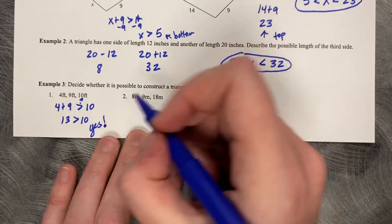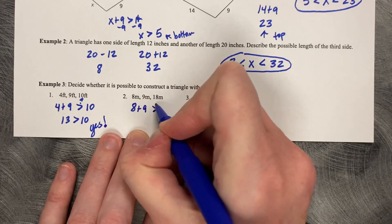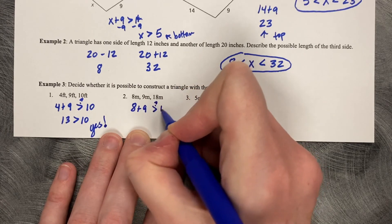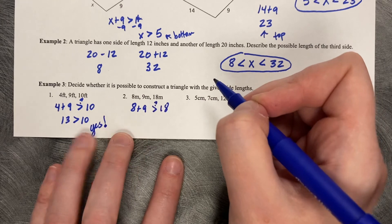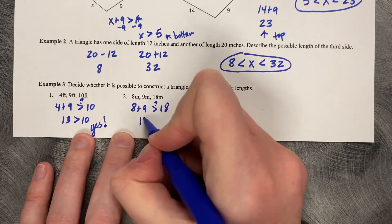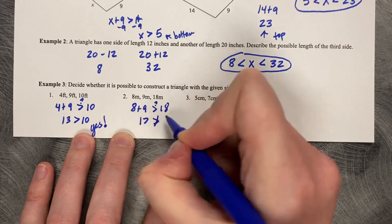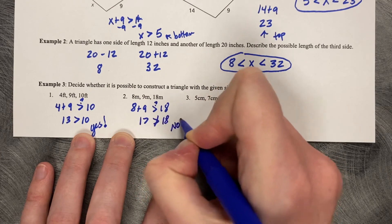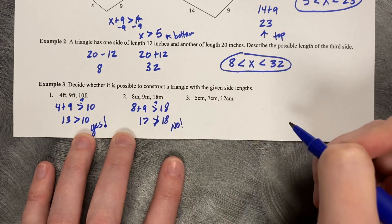How about 8, 9, and 18? Is 8 plus 9, is that greater, question mark, than 18? 8 plus 9 is 17, and 17 is not greater than 18. So no. 17 is less than 18.